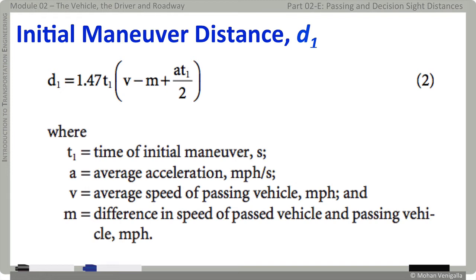Note that a new variable m is introduced for computing passing distance. m is the difference in speed between the passed vehicle — shown in blue in the illustration — and the passing vehicle, which is the red car. In the example we demonstrated, the m value would be 40 minus 30, which is the speed of the red car minus the speed of the blue car, giving an m value of 10.